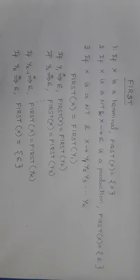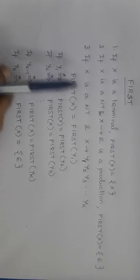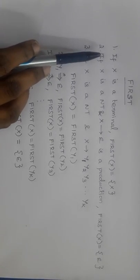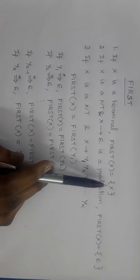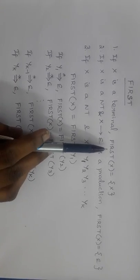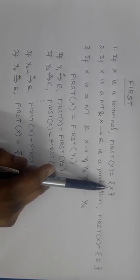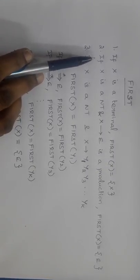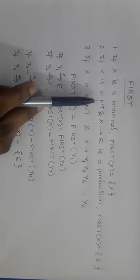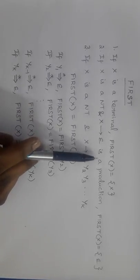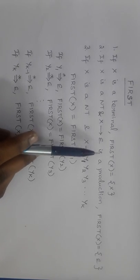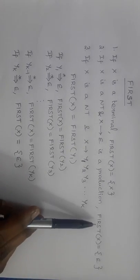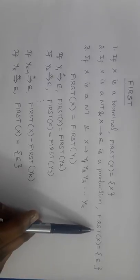Today we are going to discuss the FIRST and FOLLOW functions. There are three rules for the FIRST function. Rule 1: if X is a terminal symbol, then FIRST of X equals X — that is, FIRST of any terminal symbol is that terminal symbol. Rule 2: if X is a non-terminal symbol and X derives epsilon, then we need to add epsilon to FIRST of X.